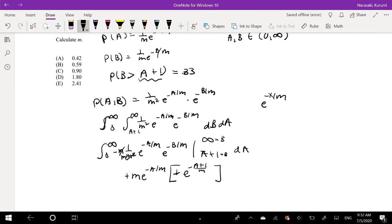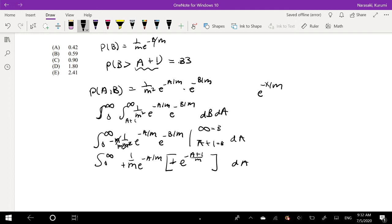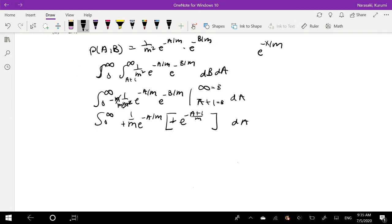We can simplify this. So two negatives make a positive. And so that's equal to 1 over M. I just have to take the integral of this, but I'm going to try to simplify it first. So this is equal to 1 over M, e to the negative, with two A's here. This is e to the negative A over M minus A plus 1 over M, right? So this is the same thing as saying 1 over M, e to the negative 2A minus 1 over M.